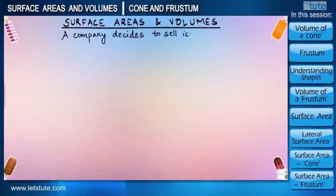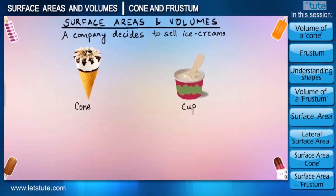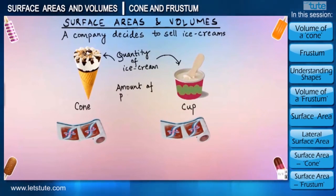Suppose a company is planning to start a new business of selling ice creams and they decide to distribute it in cones as well as in cups. But before they start doing so, they need help regarding two things: first, how much quantity of ice cream this cone and cup can hold, and second, how much paper they will require to wrap each of these two shapes. That's where our role comes into picture. As a mathematician, we have to help them out with these two important criteria.